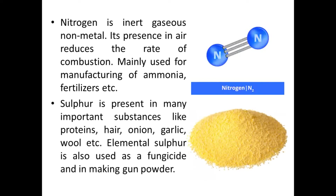Next is sulfur. Sulfur is present in many important substances like proteins, hair, onion, garlic, wool, etc. Elemental sulfur is also used as a fungicide — fungicides are those medicines which kill the fungus — and in making gunpowder.